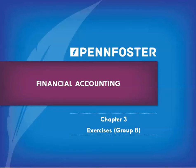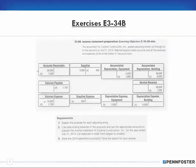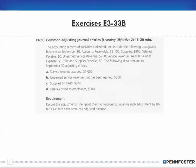Welcome back, students taking financial accounting. We are working in this series on the chapter three exercises group B. We finished on the last video working on problem 3-32, so let me get to 3-33 here. Before we get started, I'm not going to go through the normal spiel — if you don't understand something, contact your instructor — but for this problem we're making common adjusting journal entries.